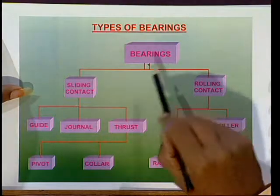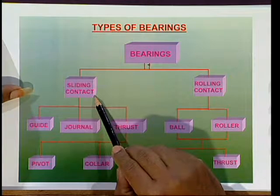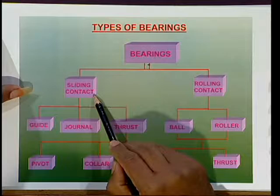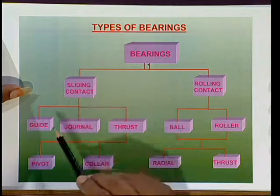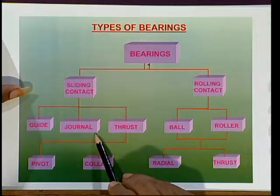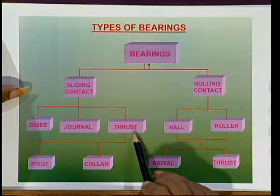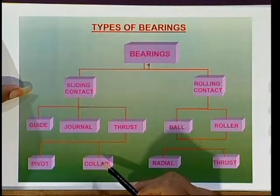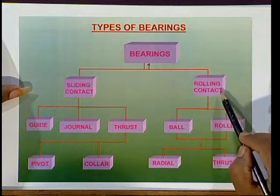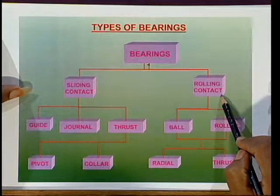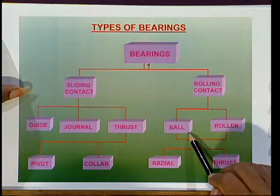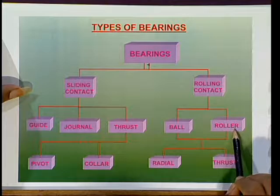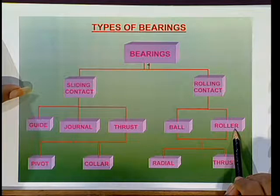Both ball and roller bearings can support the load in the radial direction or axial direction. Based on this, they are divided into radial bearings and thrust bearings. In ball or roller bearings, some balls or rollers are generally used. To reduce friction between the two metallic surfaces, we introduce balls or rollers. The balls are placed between the outer race and the inner race. Generally, the outer race, inner race, and balls are manufactured with high carbon chromium steel.